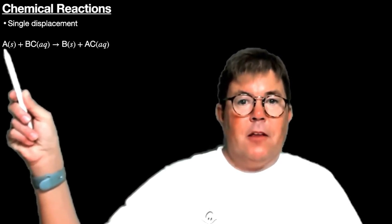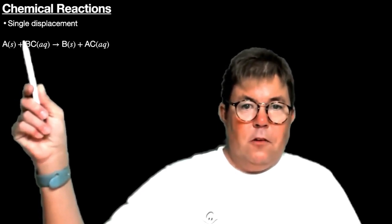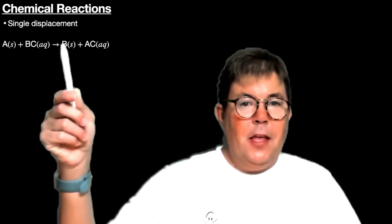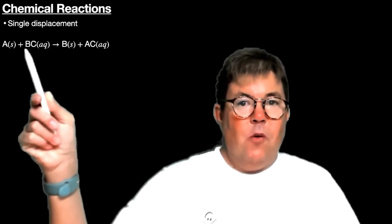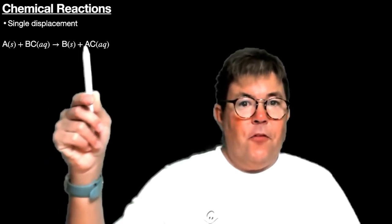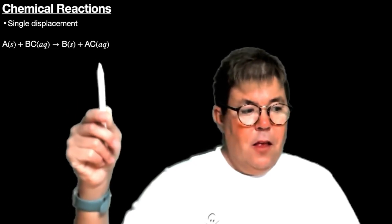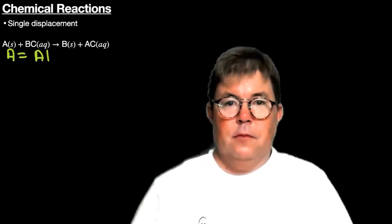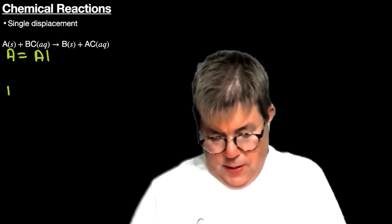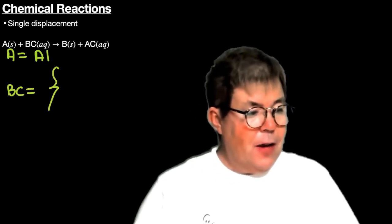Usually we have a solid metal reacting with some salt solution, and we're going to get another metal forming. Notice A was a solid; now B comes out of solution and becomes a solid, and then we have a different salt solution. In this experiment, A is going to be equal to aluminum, and C is going to equal potentially a variety of chemicals.